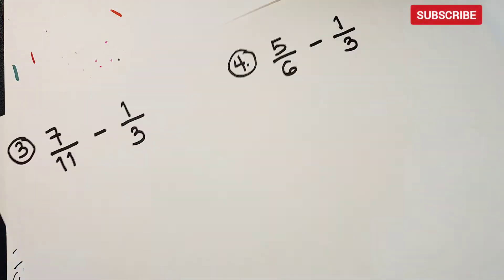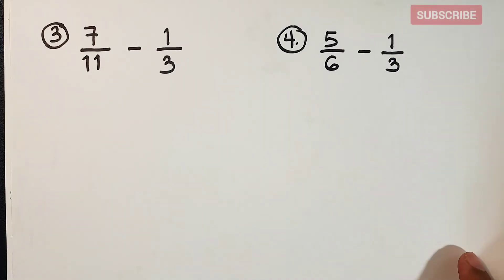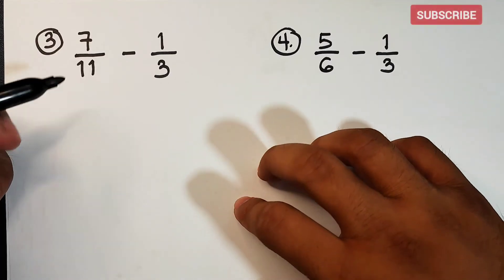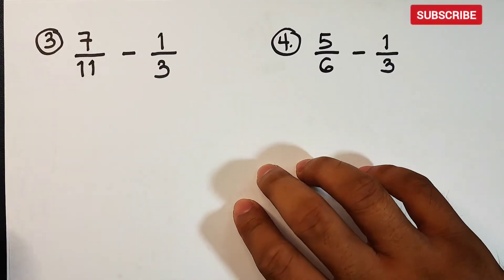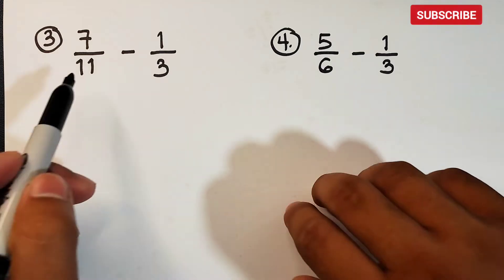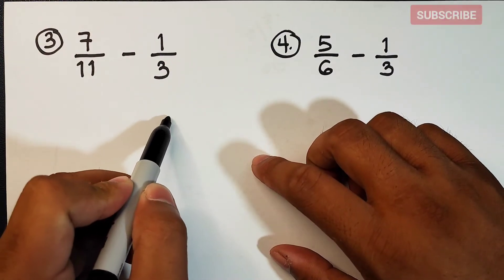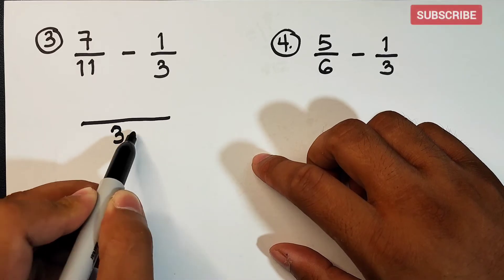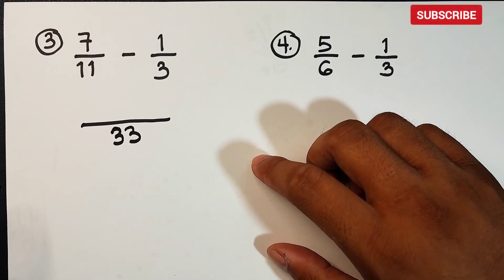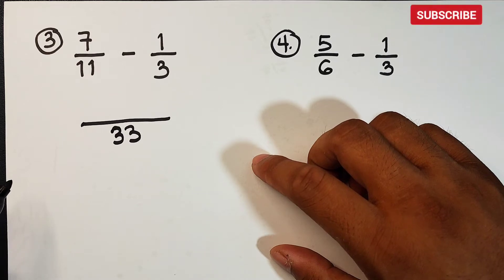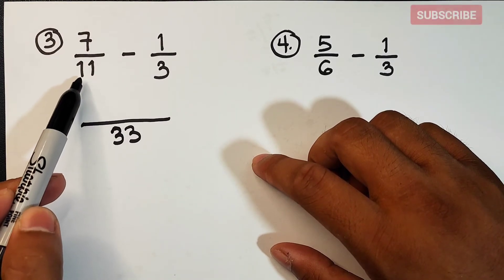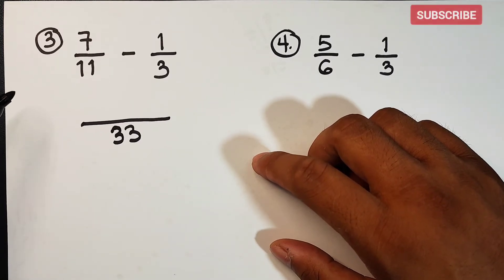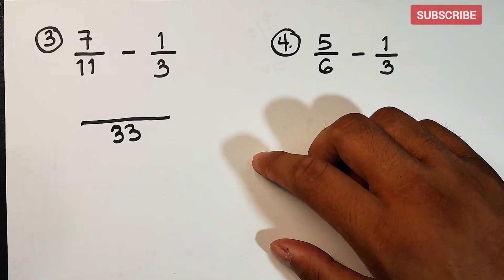Let's move on to item number 3. What we have here is 7 over 11 minus 1 over 3. As you can see, the denominators are 11 and 3, so we can say that the LCD is 33. Now, if you don't know how to find the LCD, you can search for a video on YouTube on how to find the LCD of given denominators.